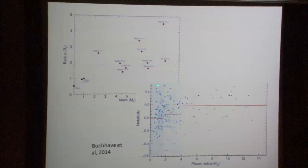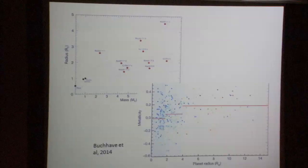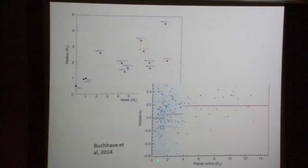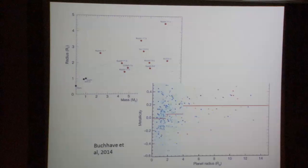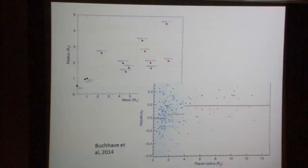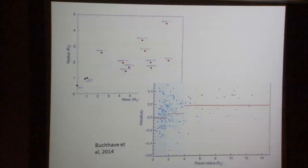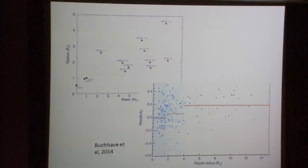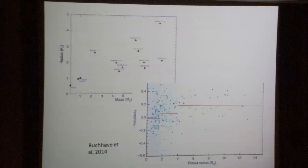This plot published in Nature just last week shows the extraordinary number of planets — planetary radius one corresponds to Earth — around stars of many different metallicities. This reminds us that when we speak of Earth and Venus, we're talking about two planets remarkably similar in radius and mass, but in a context of planets that can have an extraordinary range of composition, size, and mass.